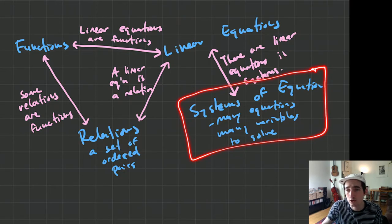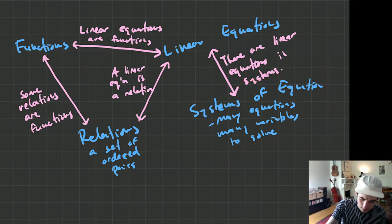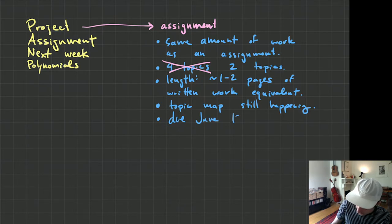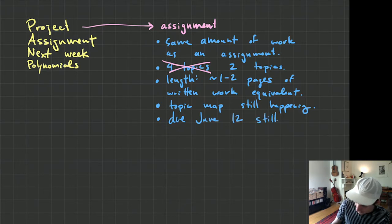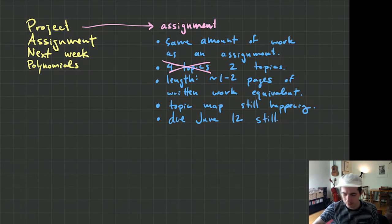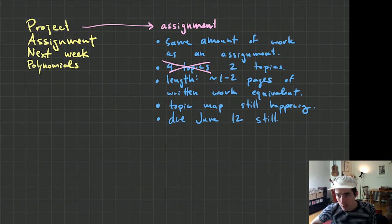The project is still going to be due on June 12th. Same due date that we had from before. Although it is the earlier due date — I did change the due date — but I really don't want to have to change it again. The due date is June 12th. Let me know if you have any questions about that in the chat or you can message me privately.